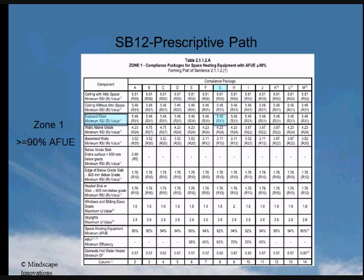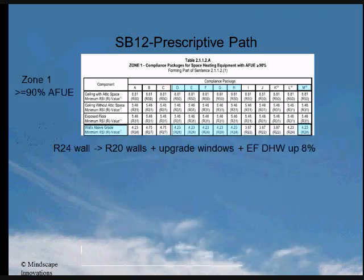Walls above grade are a bit more complicated, and they include walk-out basement walls containing the door — in this package, must be R24. The exception to this is laid out in section 2.1.1.2, sentence 7, which provides a trade-off for packages D, E, F, G, H, or M, where those packages are allowed to reduce their wall insulation to R20, provided they increase the energy efficiency of their windows by one energy star zone and increase the energy factor of their water heater by 8 percentage points.